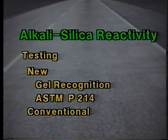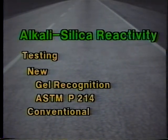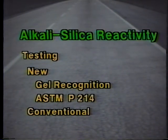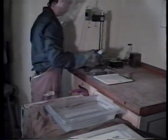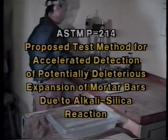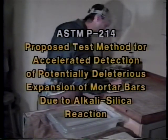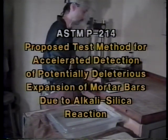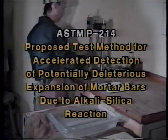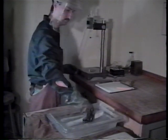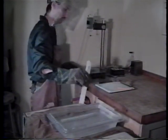And that brings us to the next test, ASTM designation P214. This test was initially developed in South Africa, further developed in Canada, refined by SHARP, and proposed to ASTM in 1990. The official title is: Proposed Test Method for Accelerated Detection of Potentially Deleterious Expansion of Mortar Bars Due to Alkali Silica Reaction. The major benefit is that results can be obtained in as little as 16 days, as compared to many months using conventional testing.